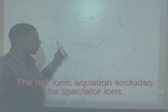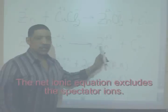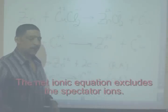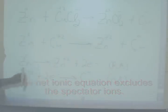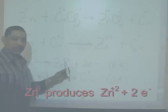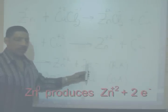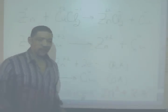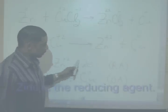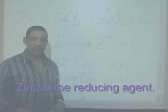If we look at the net ionic equation, we have zinc metal reacting with copper two ions to produce zinc ion and copper metal. The half reactions for this process are as follows. Zinc will undergo oxidation to produce zinc plus two ions by releasing two electrons. That makes zinc my reducing agent since it is supplying electrons for the reduction process to occur.